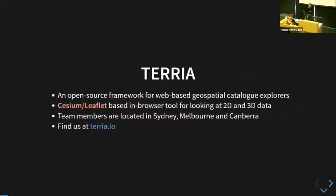What is Terrier? Terrier is an open source framework for web-based geospatial catalogue explorers. Basically, it's a Cesium Leaflet-based browser tool for looking at 2D and 3D data. My team members are located in Sydney, Melbourne, Canberra, and sometimes Hobart. If you want to know more about us, terrier.io is our website.